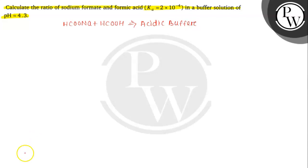So for acidic buffer, the formula of pH is equal to pKa plus log of HCOONA, that is concentration of salt, divided by concentration of acid. So this is the formula for acidic buffer.